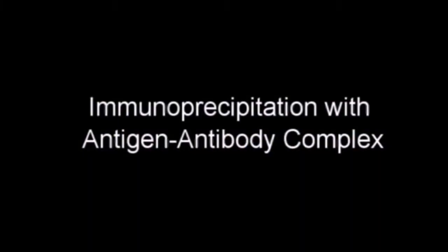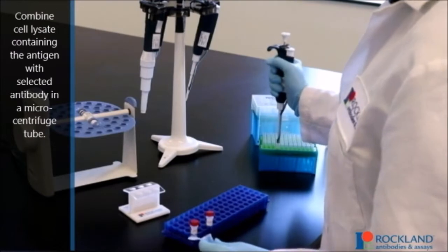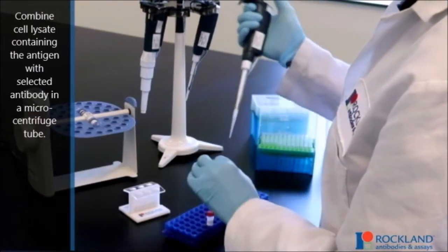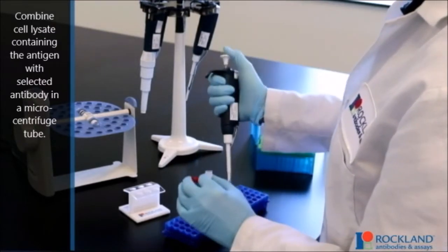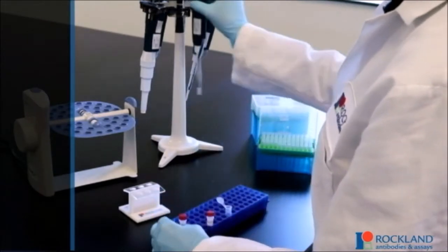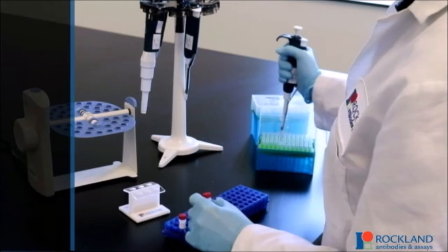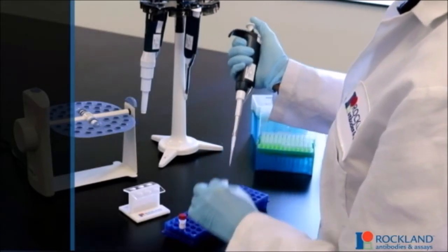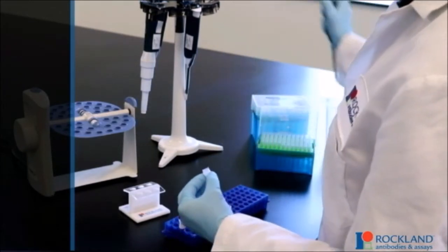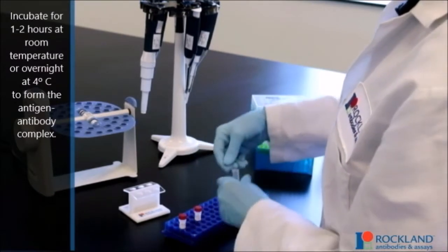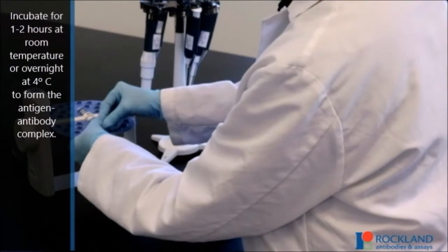Immunoprecipitation with antigen-antibody complex. Combine the cell lysate containing the antigen with the selected antibody in a microcentrifuge tube. Incubate for 1-2 hours at room temperature or overnight at 4 degrees Celsius to form the antigen-antibody complex.